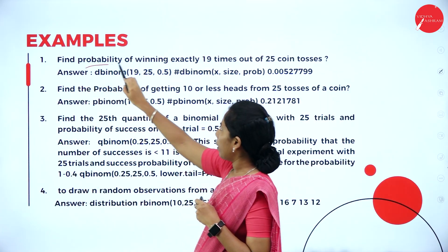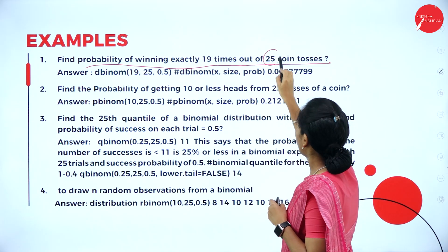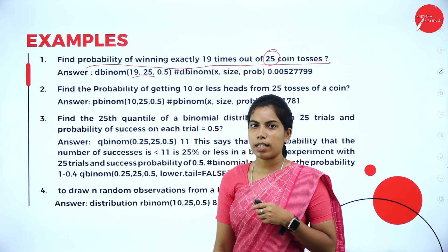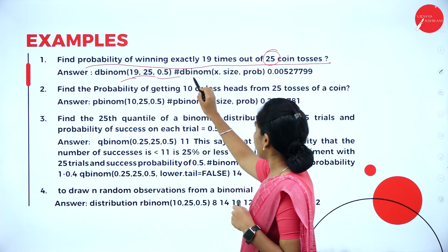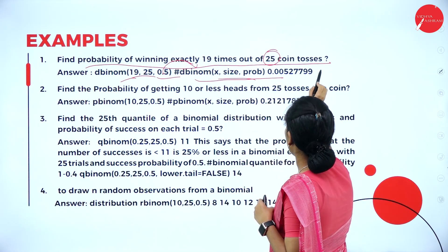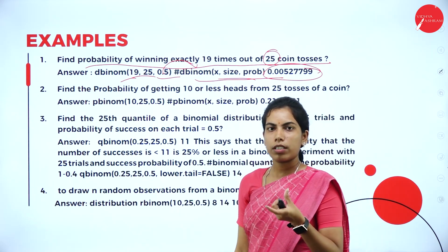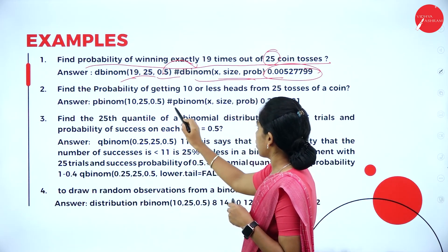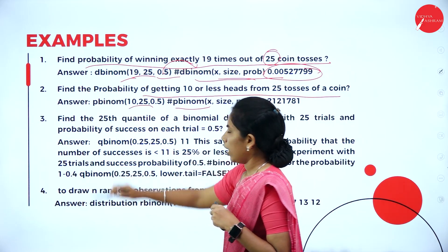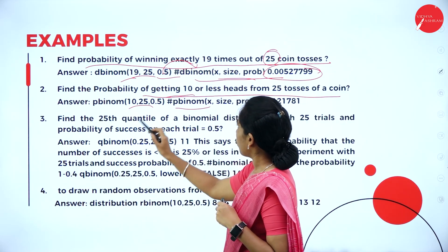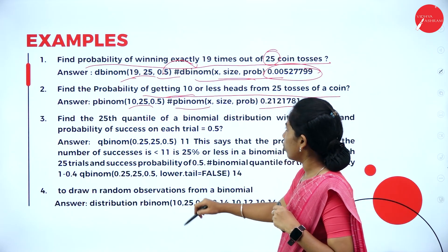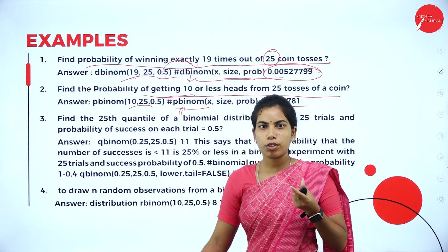Here is a worked example: find the probability of winning exactly 19 times out of 25 coin flips. So N is 25 and the target is 19. Using dbinom, the result is 0.009. For pbinom: getting 10 or less out of 25 tosses — N is 25, the minimum is 10, and the result is 0.021. Comparing dbinom and pbinom, there is a variation in their results.